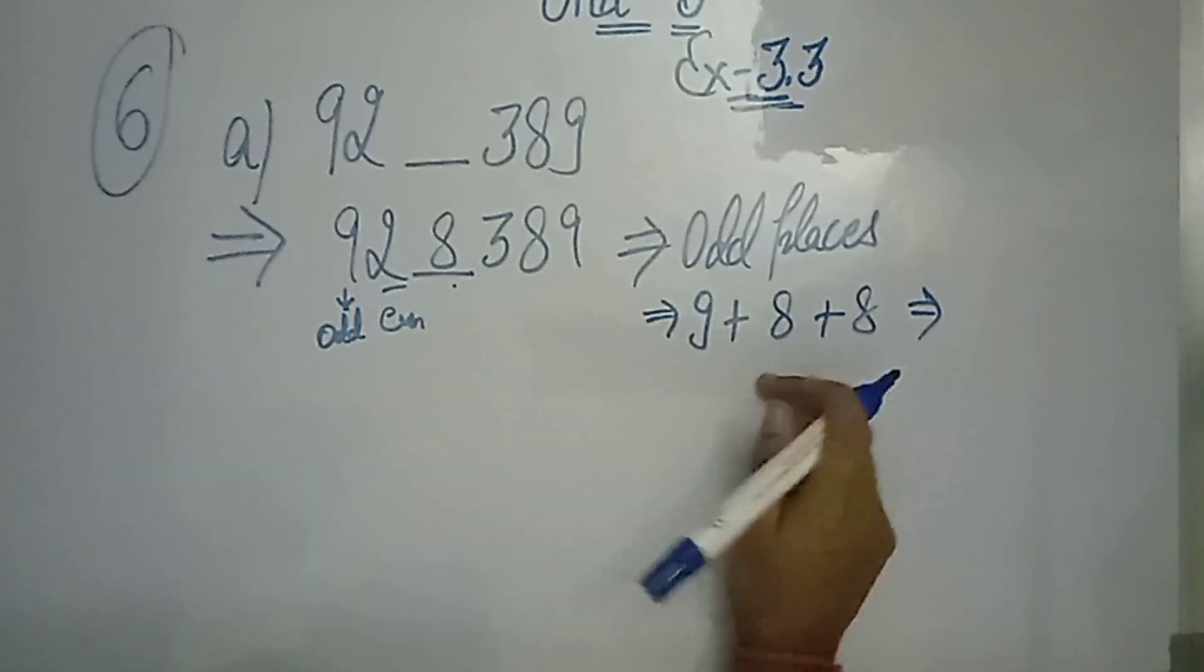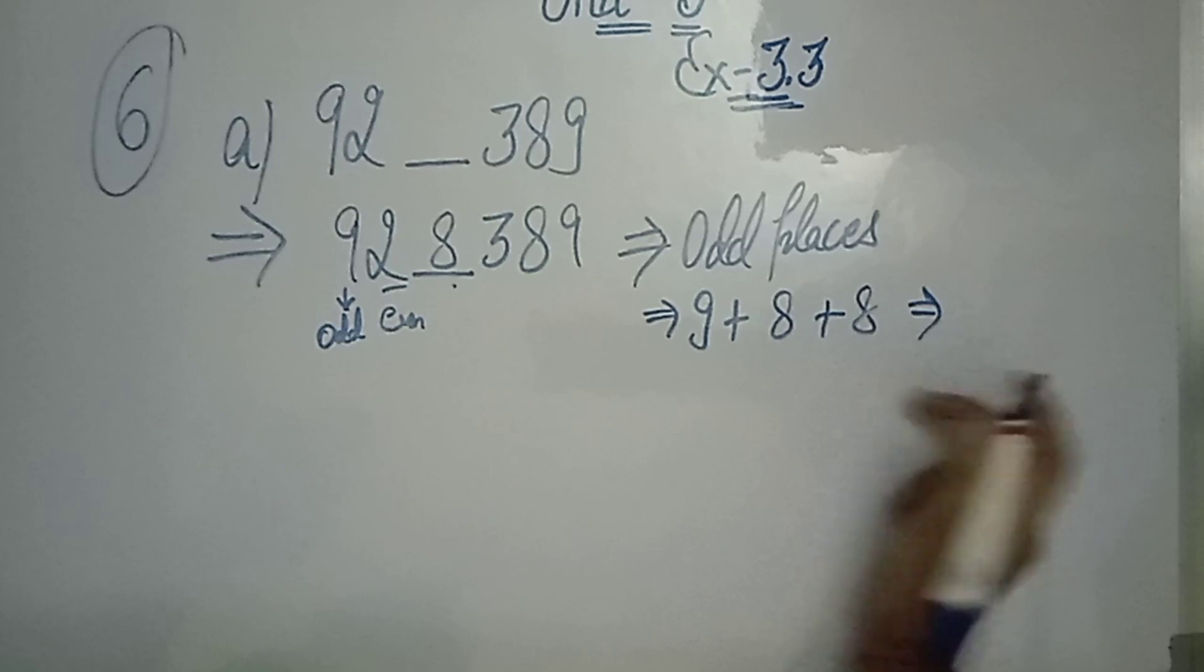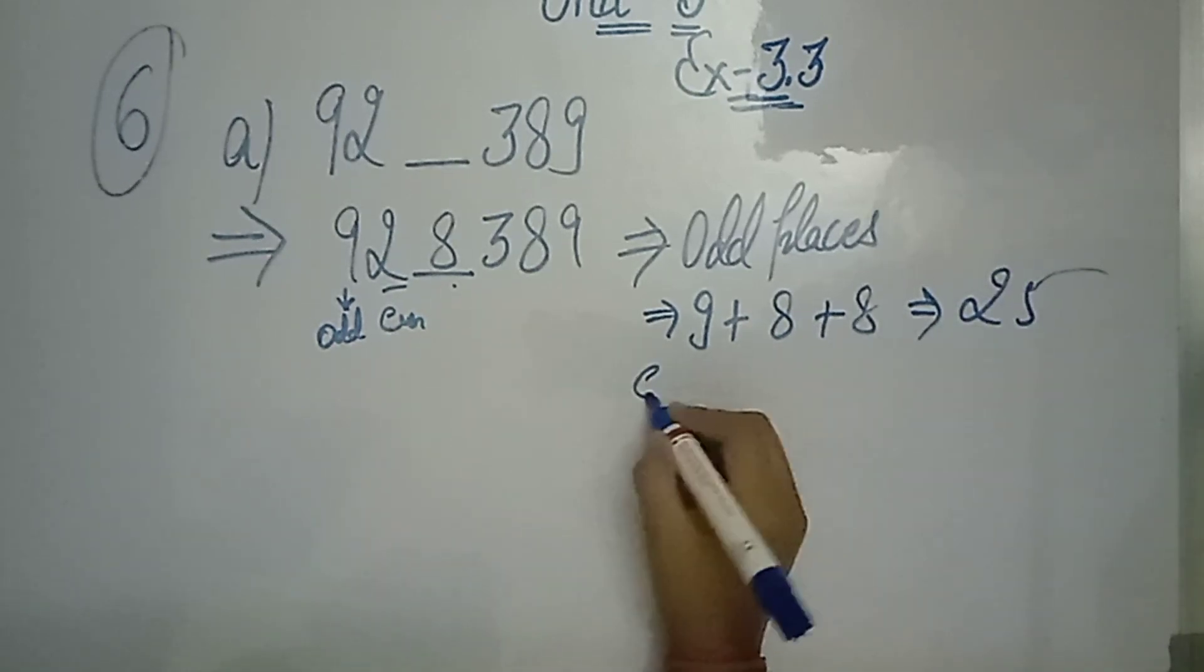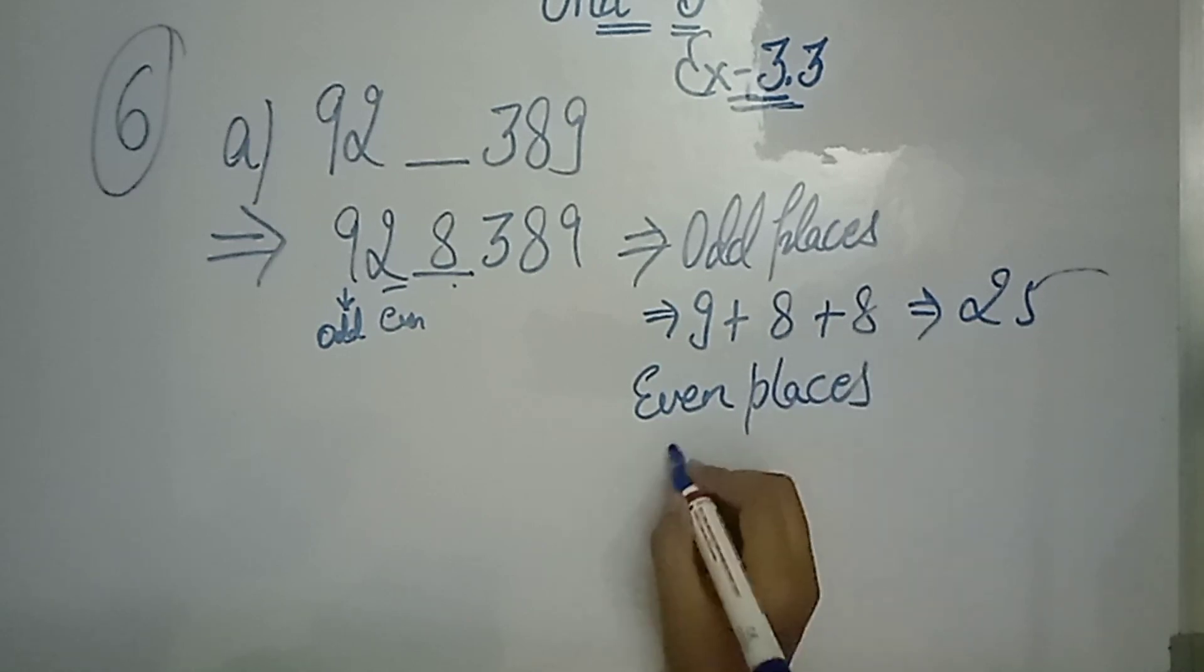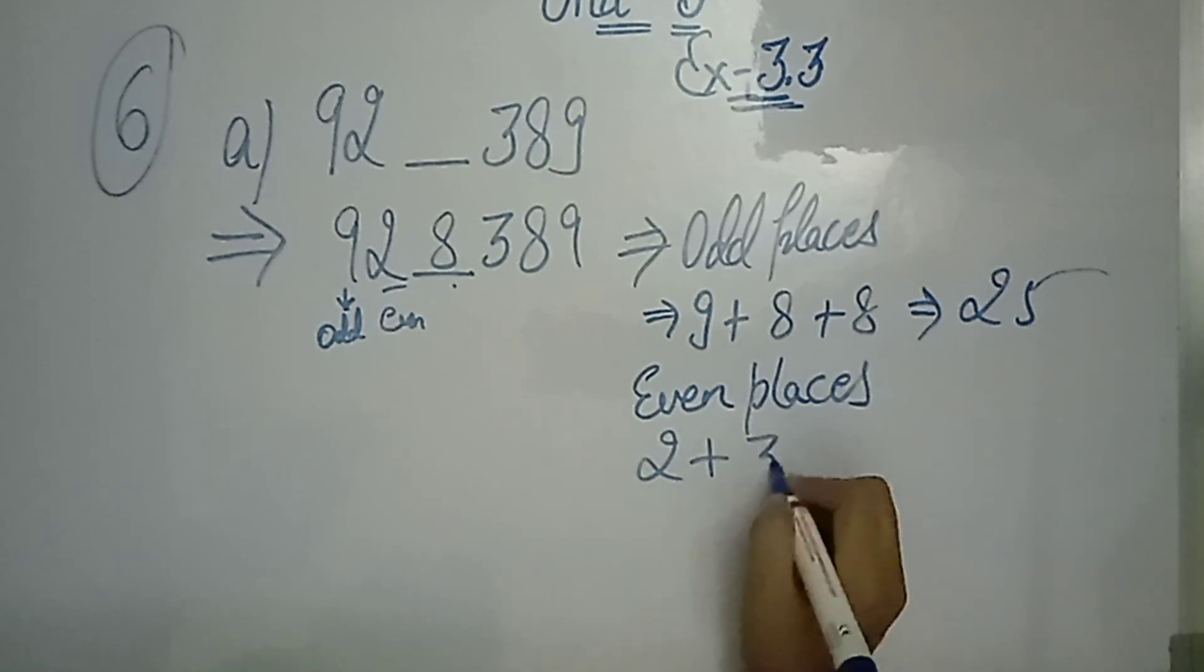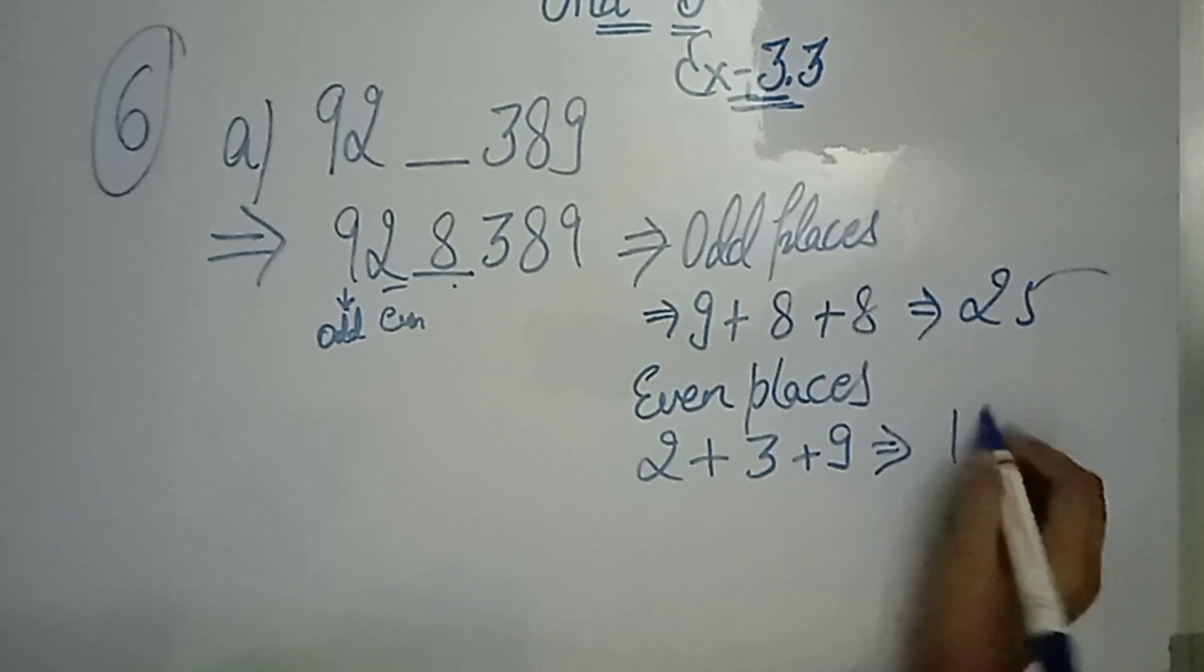9, 8, 9, 8 and 8. So how much will it be? 25. If we check the even places, then what will it be? 2 plus 3 plus 9. How much? 14.